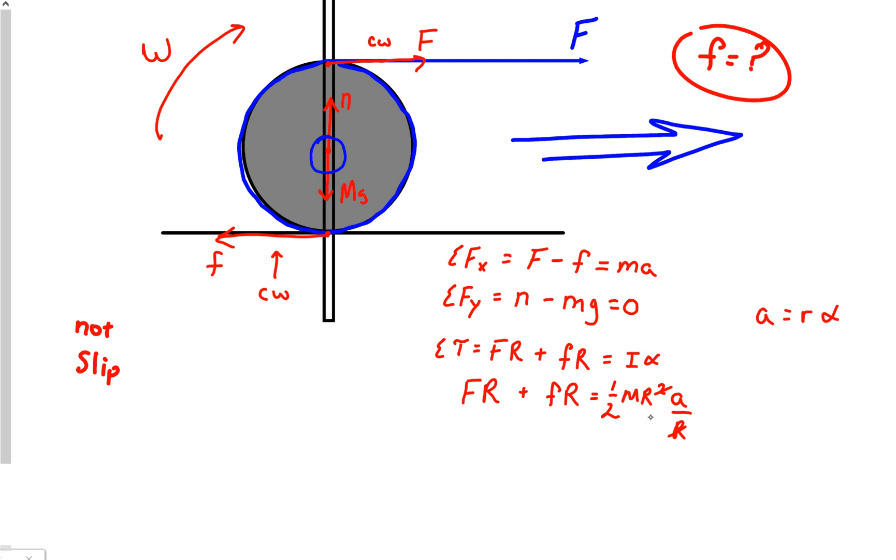And check this out. R cancel square, R, R, R. I sound like an angry pirate. Actually, it could be a happy pirate. But anyway, that's neither here nor there. So F plus lowercase f is equal to one-half MA.